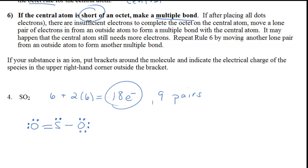So let's take a lone pair from the oxygen on the left and make a double bond. If we count the oxygen on the left: two lone pairs and two bonding pairs — that's 8. The sulfur has 3 bonding pairs and a lone pair — that's 8. The oxygen on the right has 1 bonding pair and 3 lone pairs — total of 8. So that looks like a good Lewis structure.